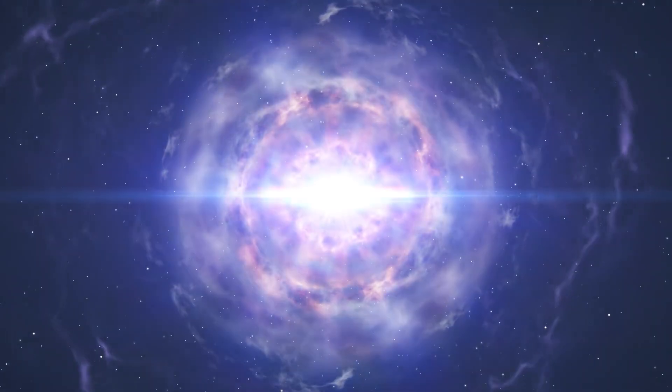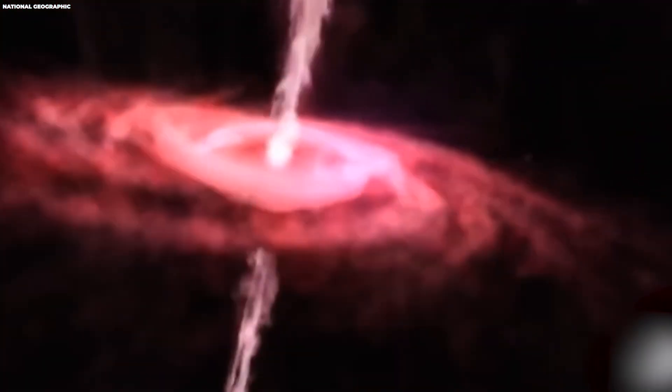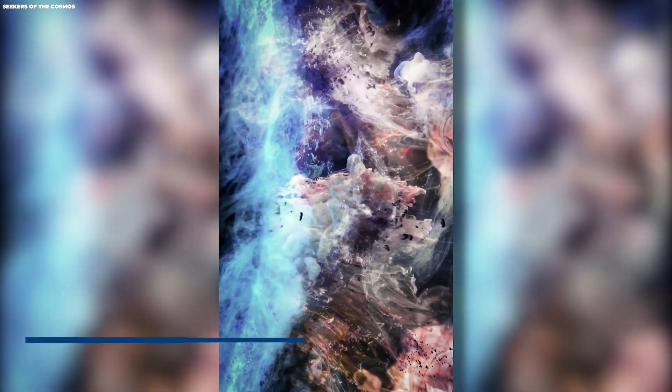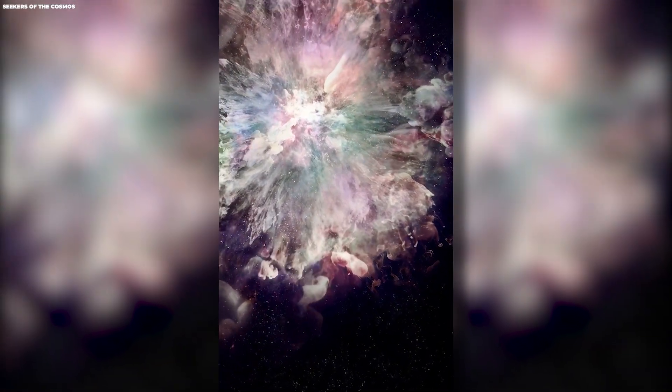Supernovas are dramatic events in the life cycle of stars. When a star exhausts its nuclear fuel, it undergoes a gravitational collapse, causing an intense burst of energy and light. This explosion can outshine entire galaxies for a brief period. During a supernova, elements are synthesized, and the star releases an enormous amount of energy into space.